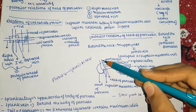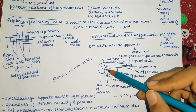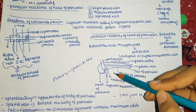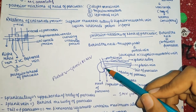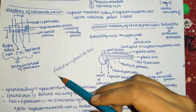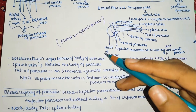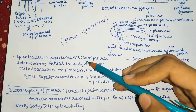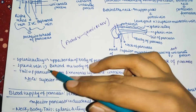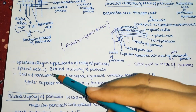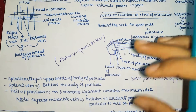Behind the neck of the pancreas is the portal vein formation — the superior mesenteric vein joins with the splenic vein to form the portal vein, and sometimes the inferior mesenteric vein drains into the splenic vein. In the upper part behind the neck is the portal vein; in the lower part is the superior mesenteric vein. The splenic artery is present at the upper border of the body of pancreas, and the splenic vein is posterior to the body. The tail of pancreas in the lienorenal ligament contains the maximum number of islets of Langerhans.